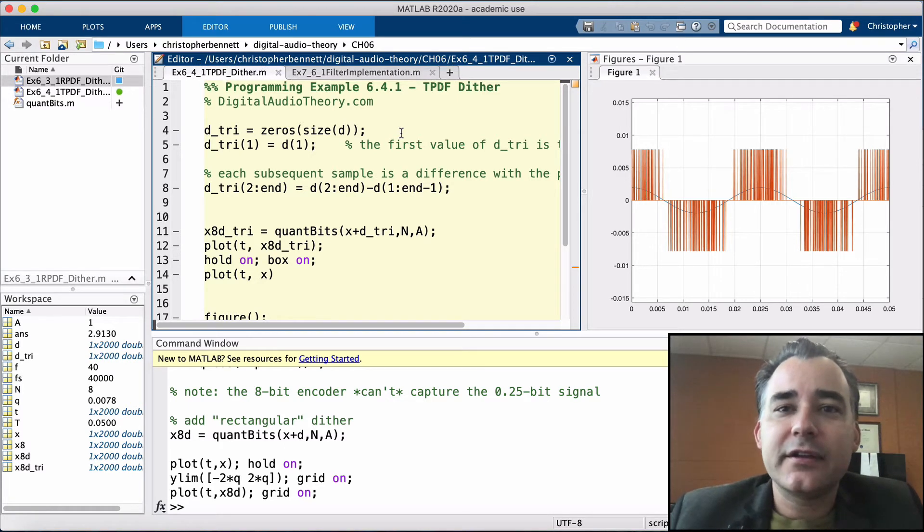A different type of dither can be created known as triangular PDF or TPDF dither. A triangular PDF can be generated by adding or subtracting two random variables with rectangular PDFs.